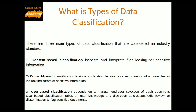The first type of classification is content-based classification. In content-based classification, we inspect and interpret files looking for sensitive information — we focus only on the data. The second type is context-based classification, where we look at application, location, or creator among other variables as indirect indicators of sensitive information.